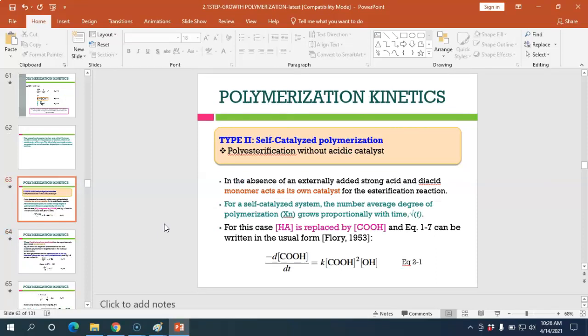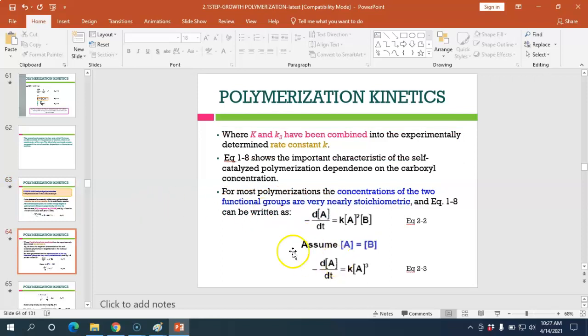For example, polyesterification without acidic catalyst. Earlier we added acid catalyst; this time we don't add catalyst. In the absence of externally added strong acid, the di-acid monomer itself acts as its own catalyst. For the esterification system in self-catalyzed polymerization, the number average degree of polymerization grows proportionally with time. For self-catalyzed, HA is replaced by [COOH], and equation 1-7 can be written with [COOH] squared and [OH].